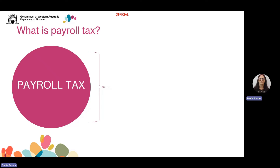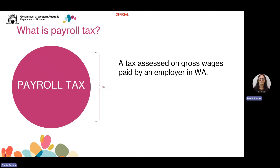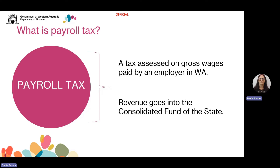So, what is payroll tax? It is a tax assessed on taxable wages paid by an employer. Payroll tax is collected by Revenue WA for the Western Australian Government. The revenue raised by payroll tax is paid into the Consolidated Fund of the State to meet the costs of public services such as education, health, public safety and law and order.